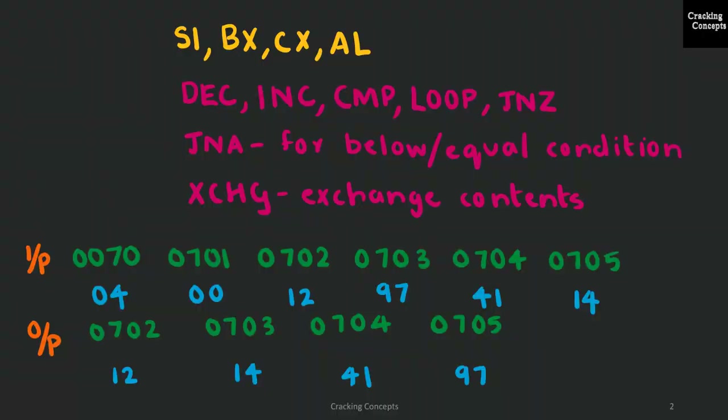To begin with, I am using the following registers in this program. SI, the source index register, will be pointing to a particular memory address. BX and CX will be used as counters for comparison, and AL will store one of the numbers to be compared. The other number will be referenced using SI as the location pointed to by SI.